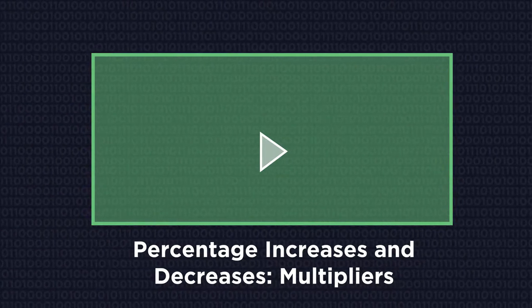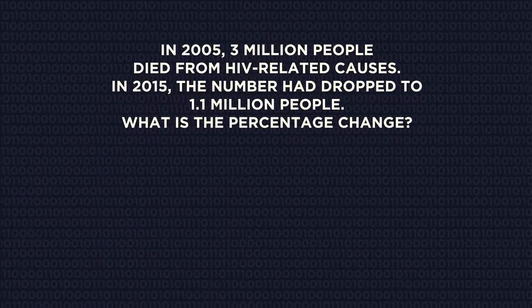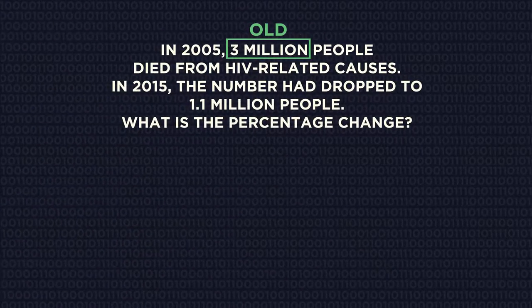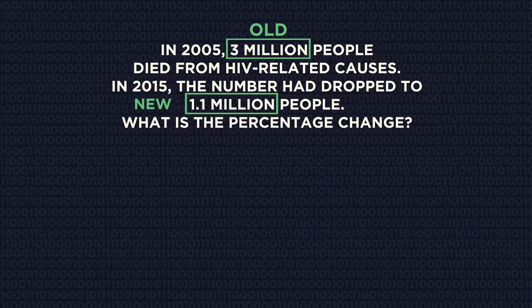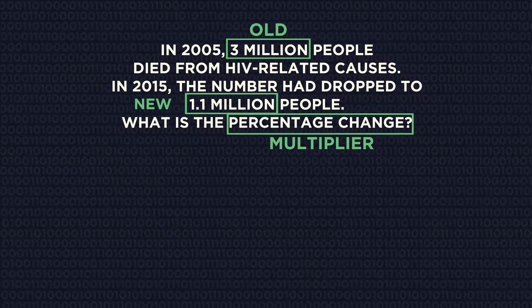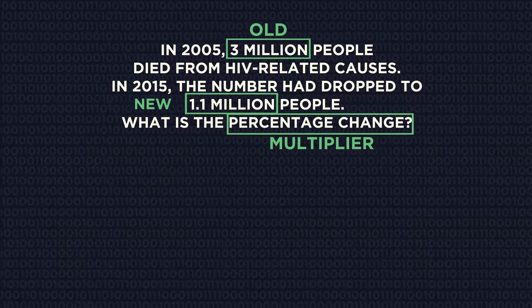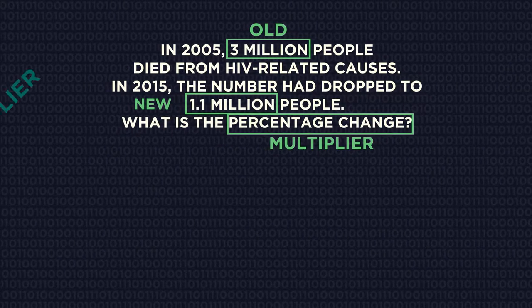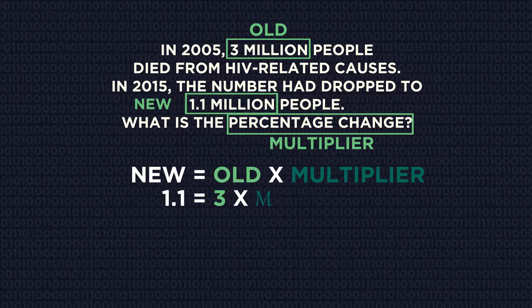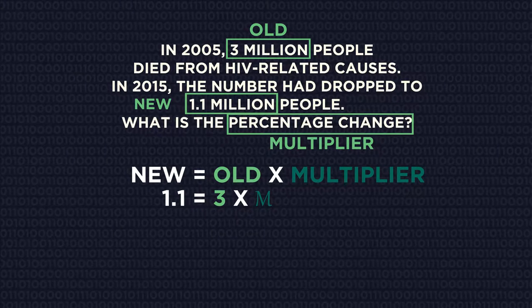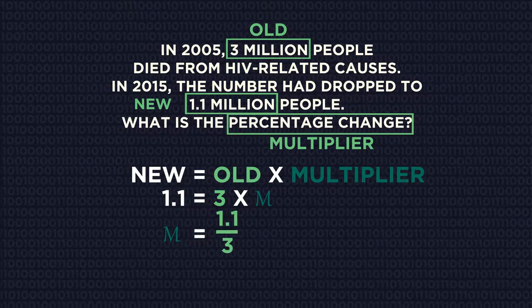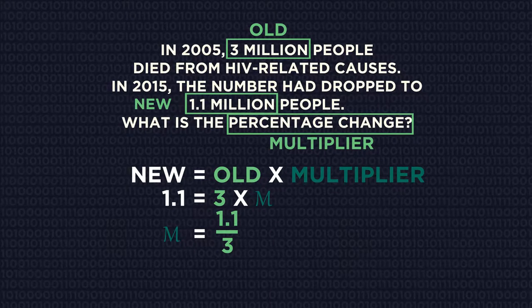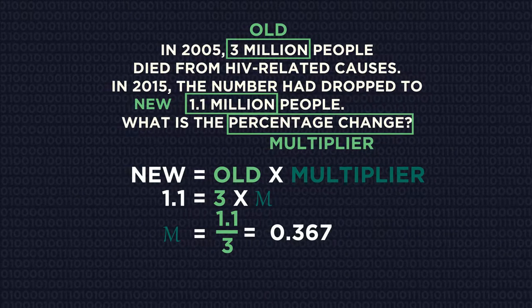So let's have a look at some examples. For this question, 2005 is the old value and 2015 is the new value. We want to find the percentage change, so this is the multiplier. Substitute in the values — we don't know the multiplier, so rearrange and solve for m. m equals 0.367.